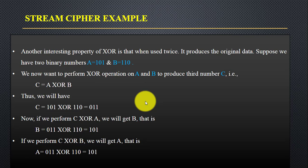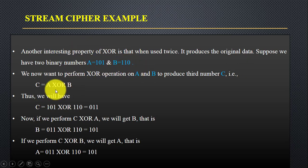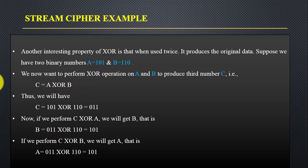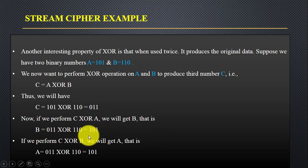Here's another property of stream cipher: when you apply XOR logic twice, it produces the original data. Suppose we have two binary numbers 101 and 110. Compute C = A XOR B and you get C = 011. Now when you perform C XOR A again, you get back the original value 101.